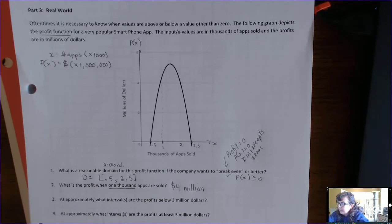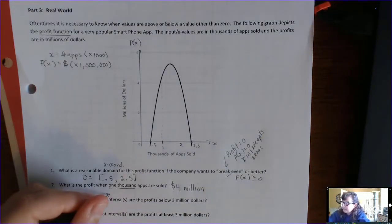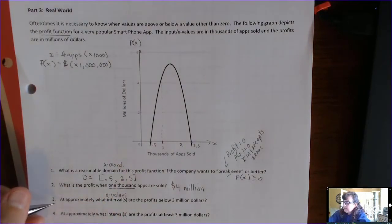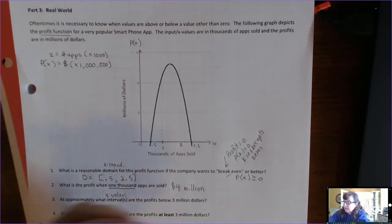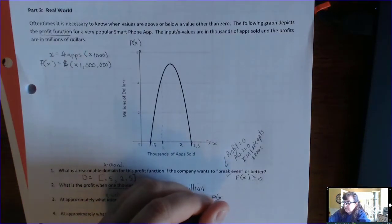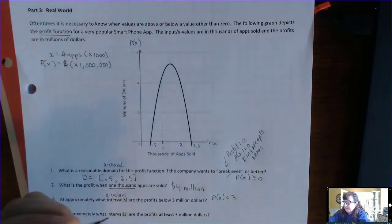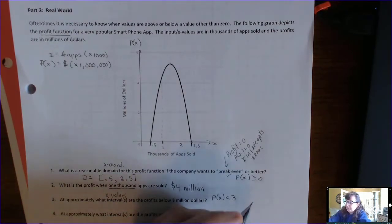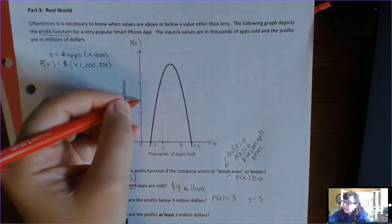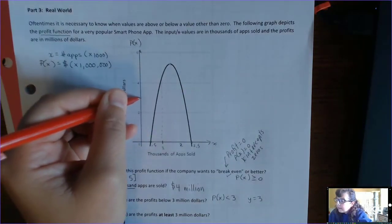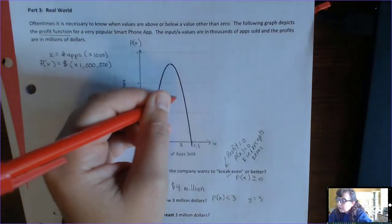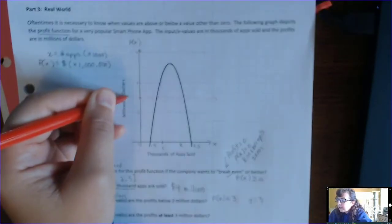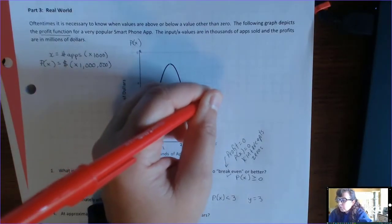Next question, at approximately what interval, that means x coordinates, x values, and interval notation, what interval are the profits below 3 million dollars? So, this is asking this question. What's the x values when P of x is less than 3? So, remember what we're going to do is we're going to draw a horizontal line, y equals 3, which would be halfway between 2 and 4, and that's my line P of x equals 3 or y equals 3.